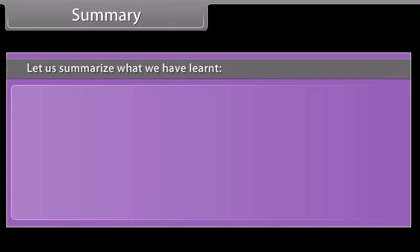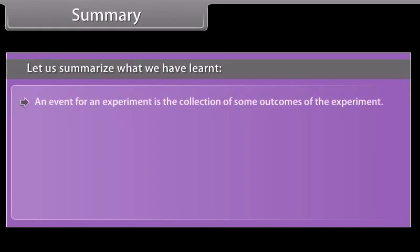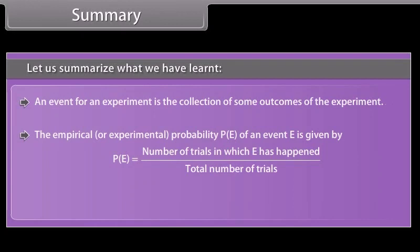Summary. Let us summarize what we have learnt. An event for an experiment is the collection of some outcomes of the experiment. The empirical or experimental probability P(E) of an event E is given by P(E) equals number of trials in which E has happened upon total number of trials. The sum of all the probabilities is 1.